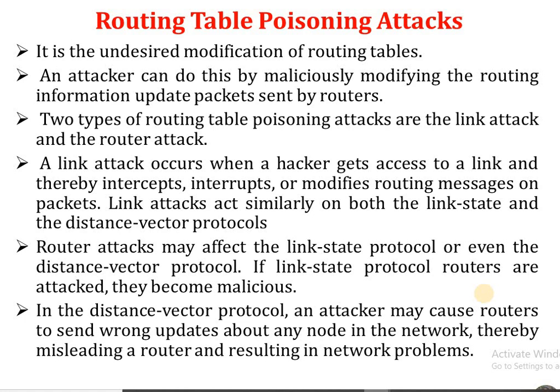The next attack is routing table poisoning — an undesired modification of routing tables. All packet forwarding and routing takes place through the routing table, making it a critical factor. When the routing table is attacked, the security of the entire network is compromised. An attacker can do this by maliciously modifying routing information update packets sent by the router.